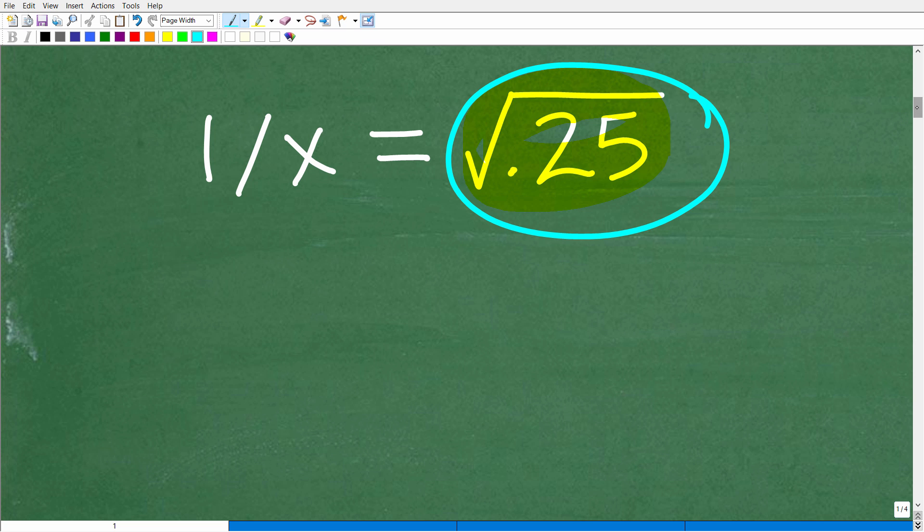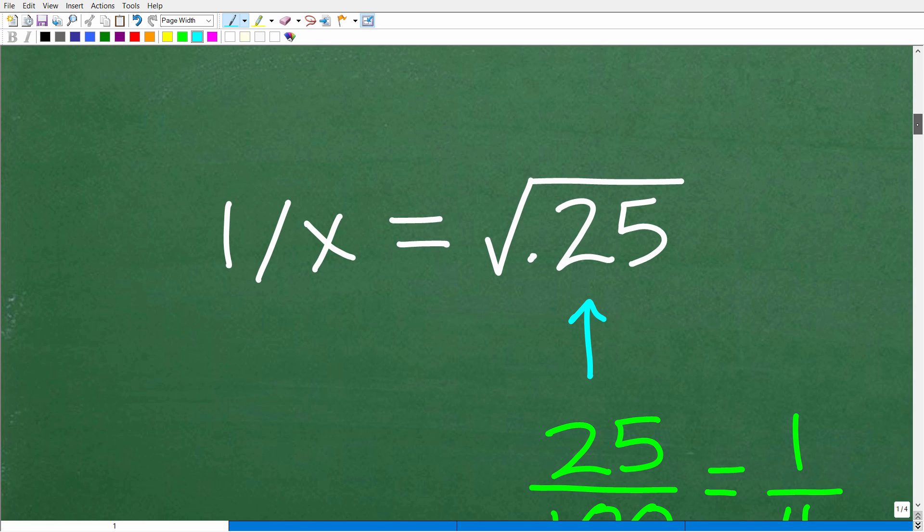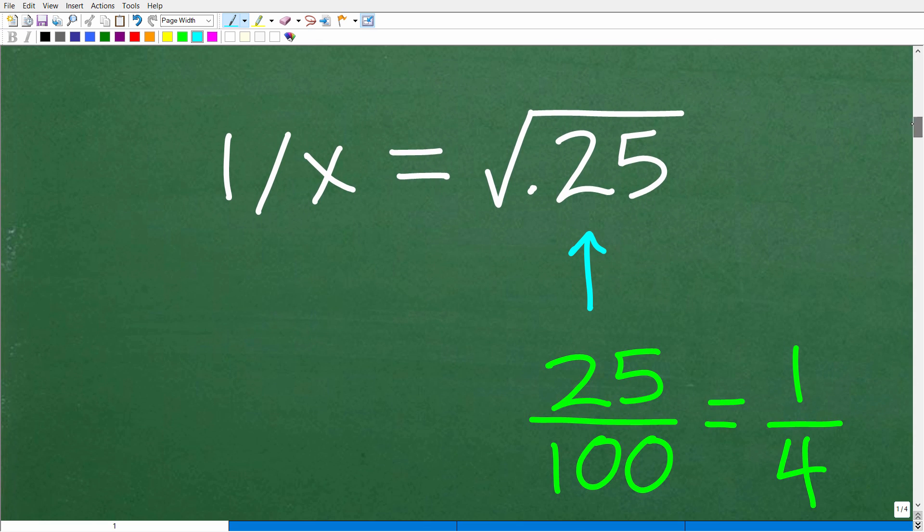So how can we do that? Well, we can do this by using our knowledge of place value. Instead of taking the square root of a decimal, it might be easier to think of this as a fraction. So 0.25 is equivalent to what fraction? Well, we have to look at this fraction. Matter of fact, let me put it over here, 0.25.